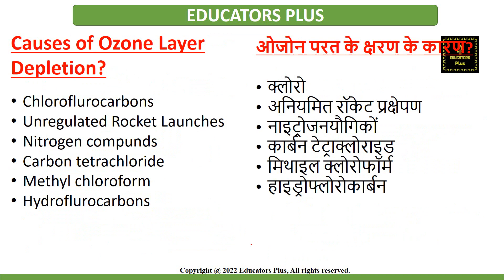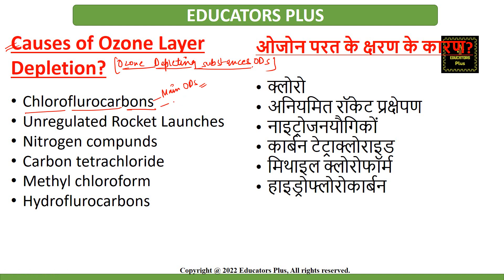The main causes are ozone depleting substances. CFCs are the main cause behind ozone layer depletion. These CFCs are released by spray aerosols, refrigerators, air conditioners, etc. The molecules of chlorofluorocarbons are broken down by ultraviolet radiations and release chlorine atoms, which react with ozone and destroy it.